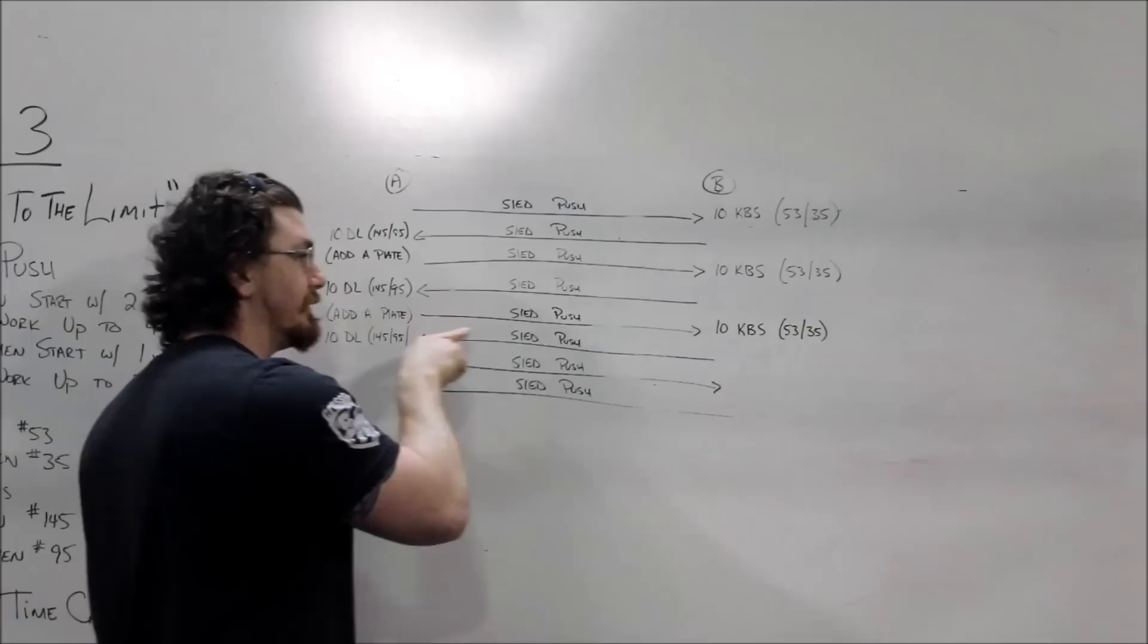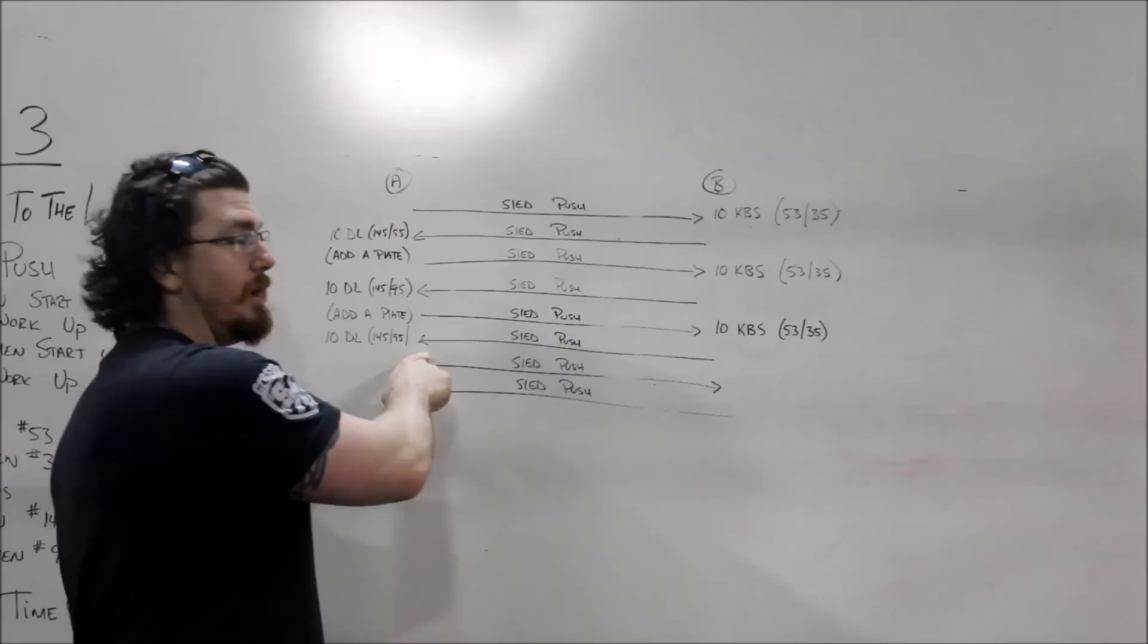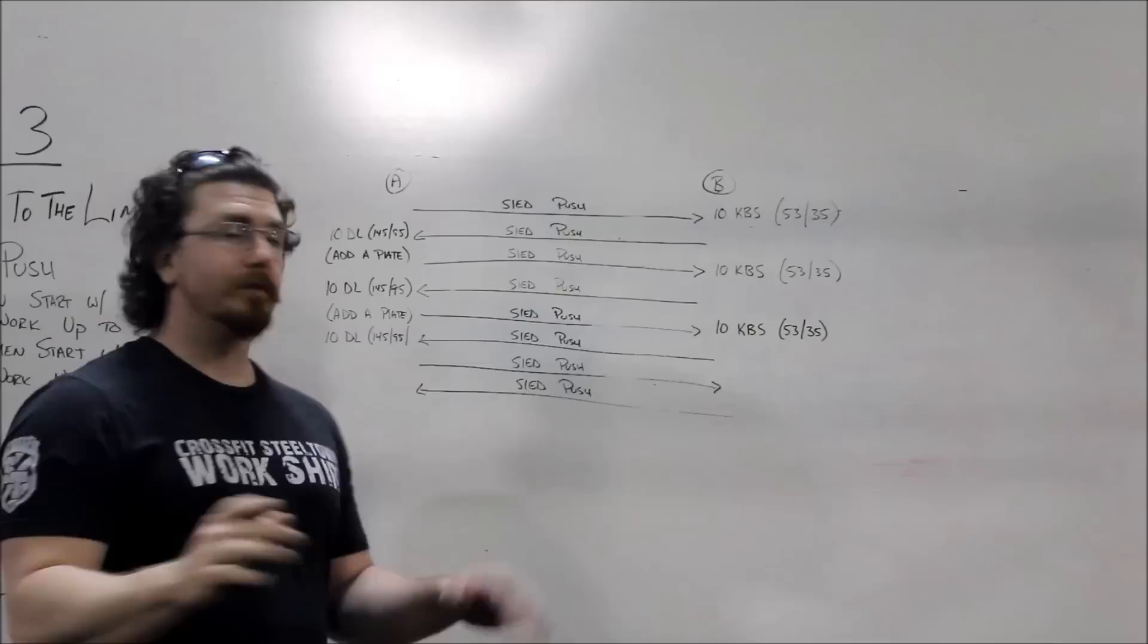Once you're complete with those two tasks, you jump on the sled, push it down, ten more kettlebell swings, push it back. Once you get down here the third time, all you have to do is complete ten deadlifts. Once those ten deadlifts are done, it's a sprint to the finish.